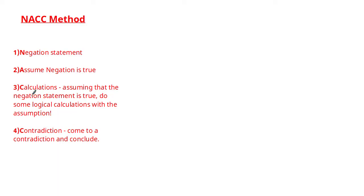The final step is the Contradiction. Based on your calculations you will come to a contradiction, which will then allow you to conclude the proof of your statement. This will all make much more sense when we go through examples. However, based on what I've seen students struggling with, I'm going to focus on the negation statement — how to derive it — as it's the first part of the method and in some sense the most important.